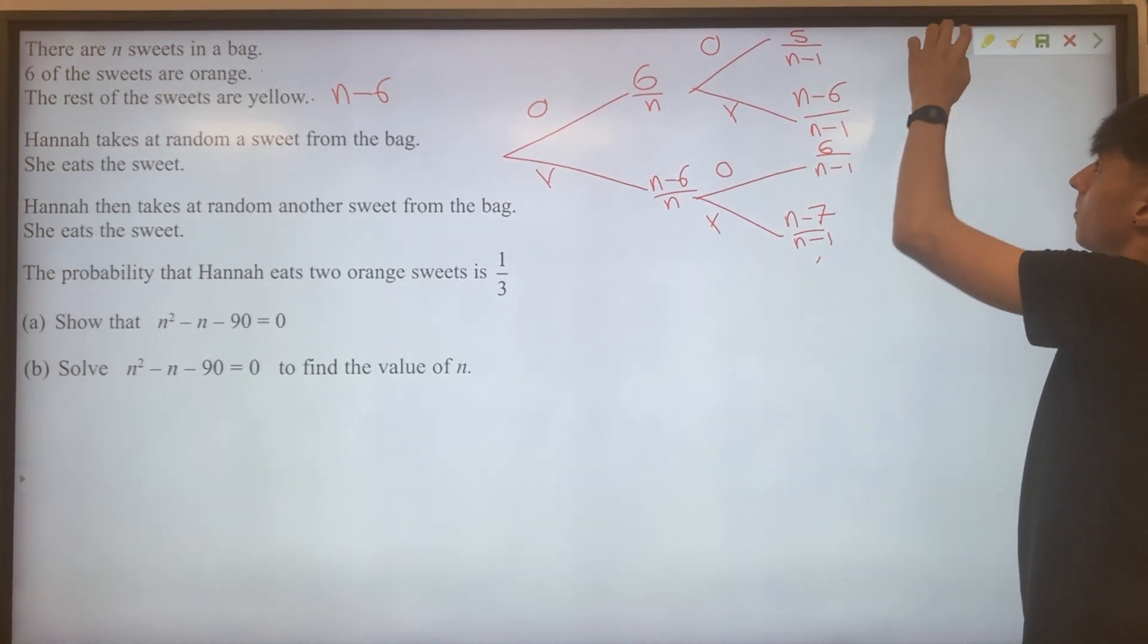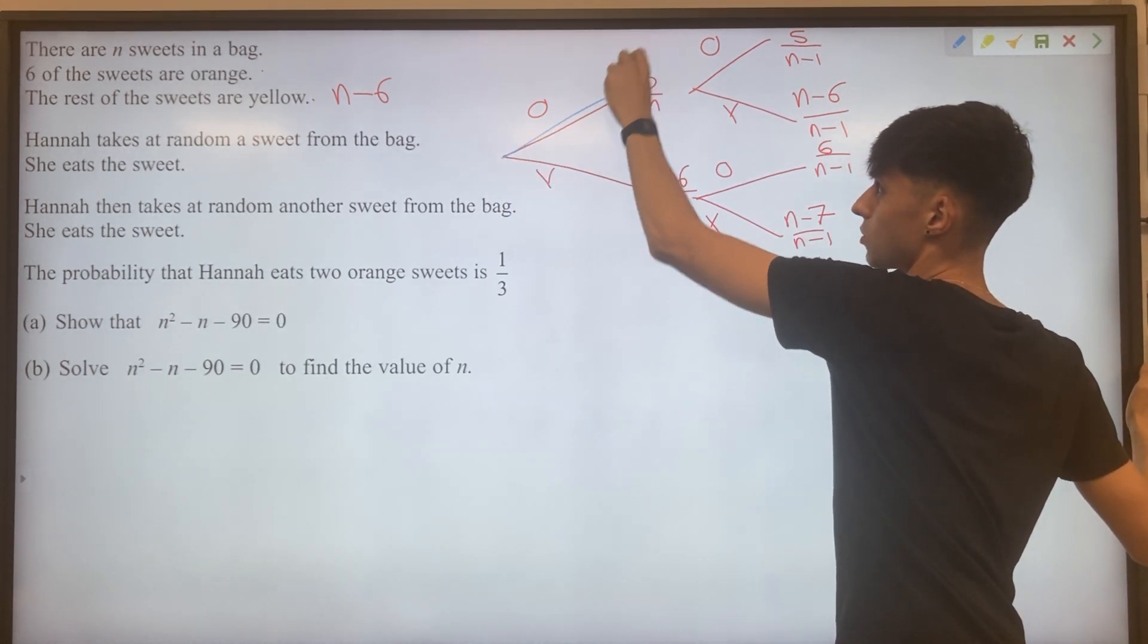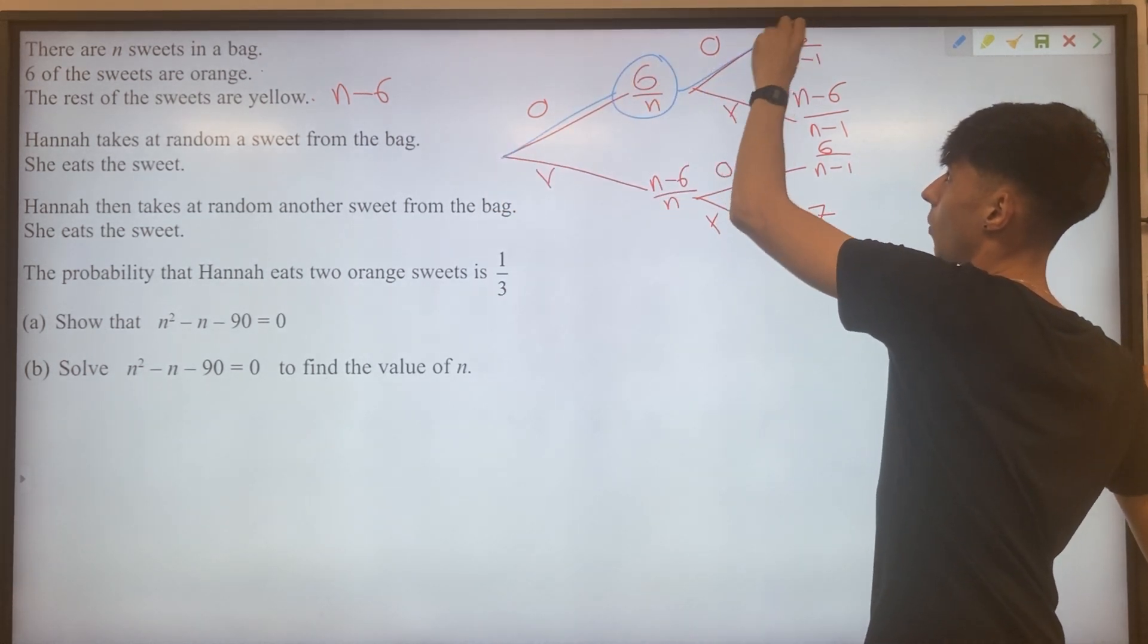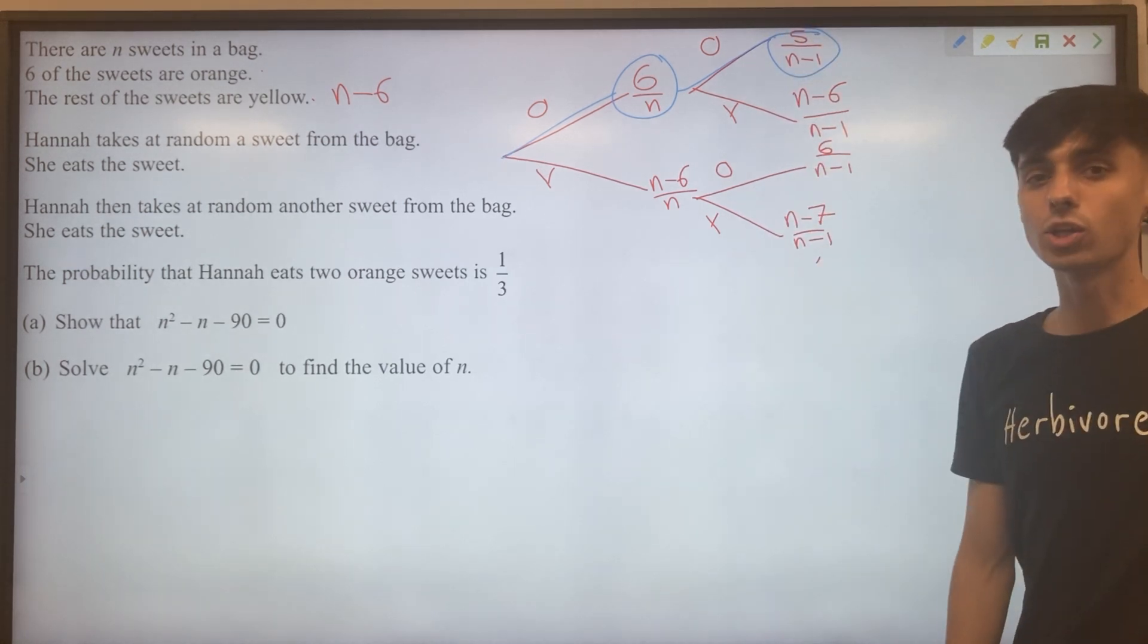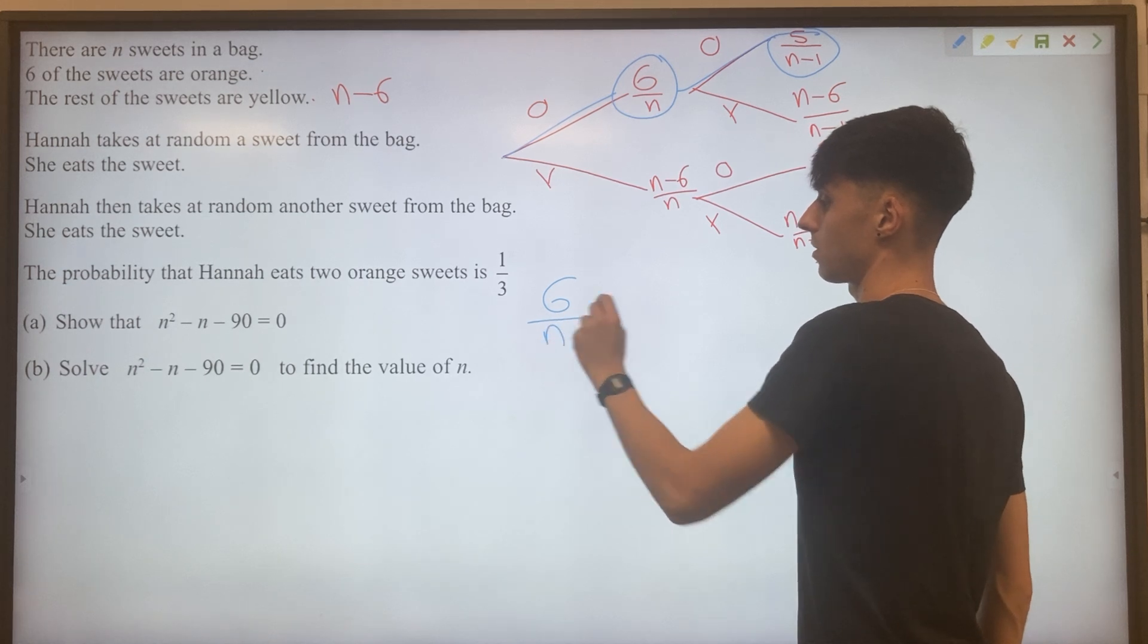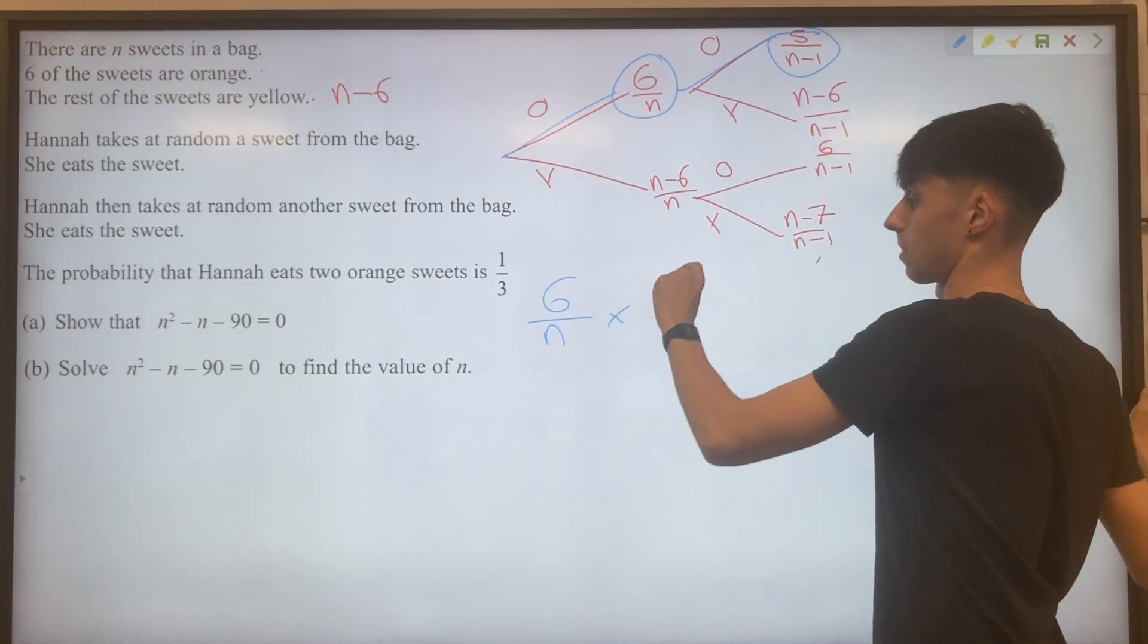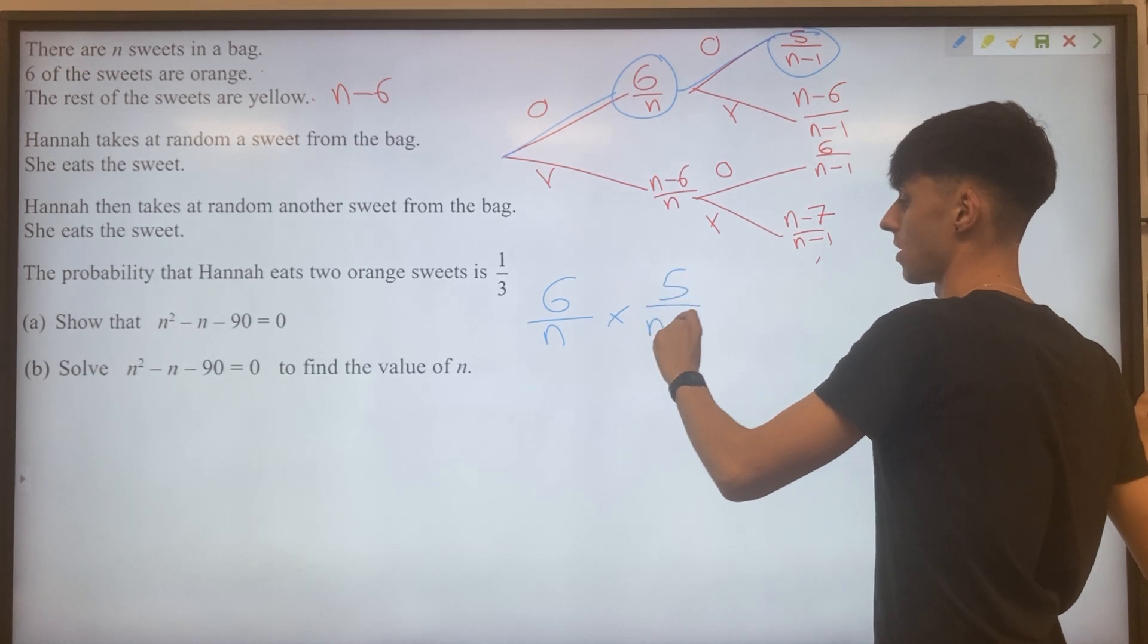So let's think about that probability. Where is it coming from? Well, two orange sweets. That's orange here, and then orange again. And looking at those two probabilities, we've got six divided by N, and then five divided by N minus one.